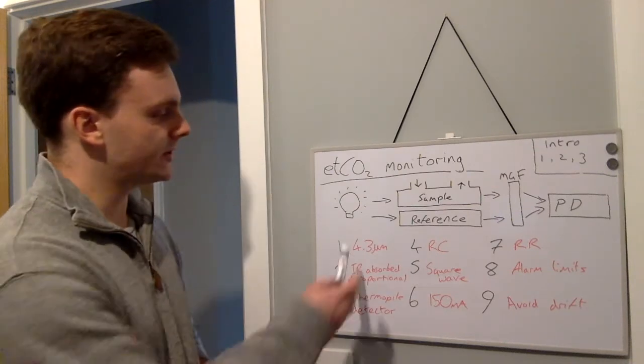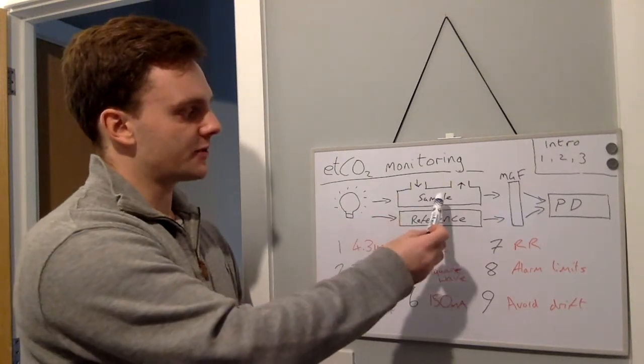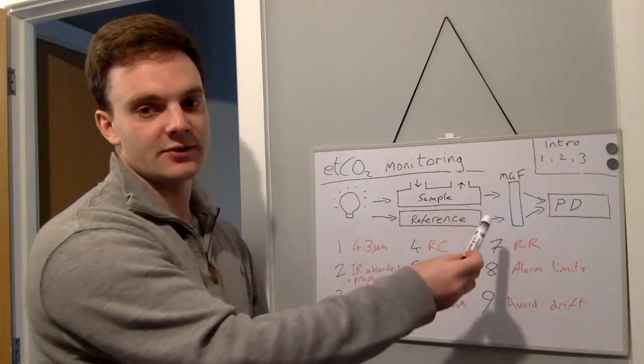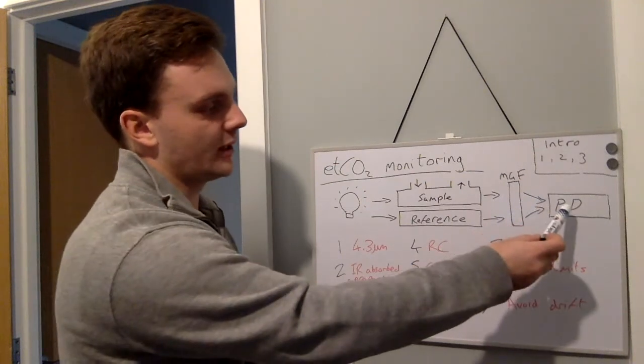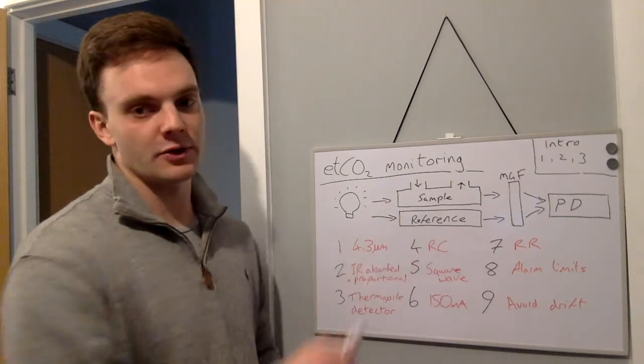So we look at this diagram here. We have a light source. The light source then passes through a sample chamber, a multi gas filter, and then will hit a photo detector. We have the same thing that happens through a reference chamber.